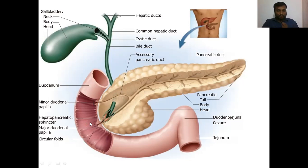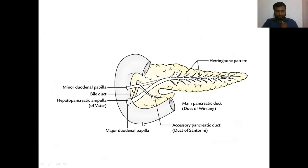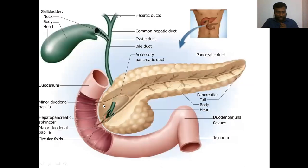Now the accessory pancreatic duct starts from the lower part of the head of the pancreas. From there, it runs upwards and reaches the second part of the duodenum, where it opens into the duodenum through the minor duodenal papilla. We can see another small conical-shaped projection here.